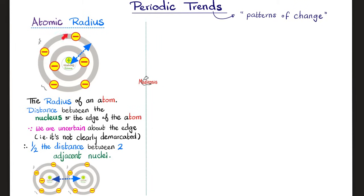Now let's talk about the periodic trends. First, atomic radius. Definition: atomic radius is the radius of the atom — the radius is half the diameter, so the radius is from the center to the outermost part, i.e., the distance between the nucleus and the edge of the atom. Is the edge of the atom clearly demarcated? No, it is vague. Therefore, a better definition: take the distance between the nuclei of two identical atoms and give half of that distance — that is the radius of the atom.